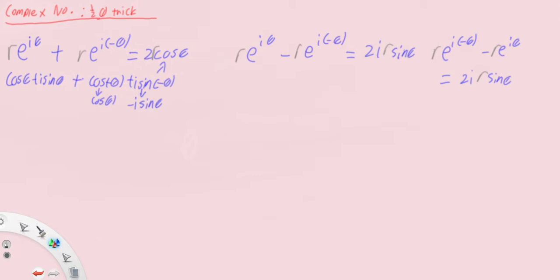How does this relate to the half angle trick? Let's say we have e^(iθ) + 1. We can actually condense this to a single term. In the three identities we have one positive argument and one negative argument. How do we get that from e^(iθ) + 1? We use the idea of indices, where we factorize out the half angle — hence the name of this trick. We factorize out θ/2, the half angle.